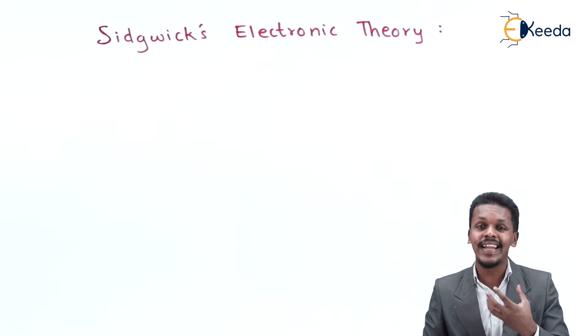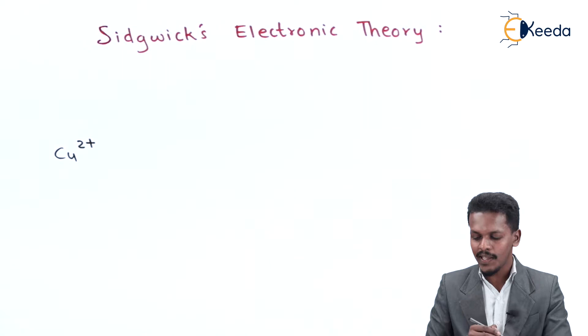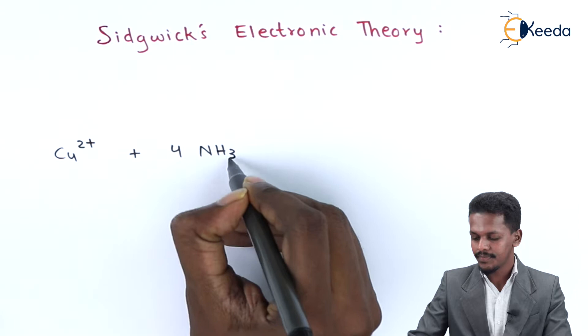Consider Cu²⁺ ion, that is cupric ion, surrounded by four moles of NH₃. Here we understand that NH₃ is a ligand and it has an electron pair on it.